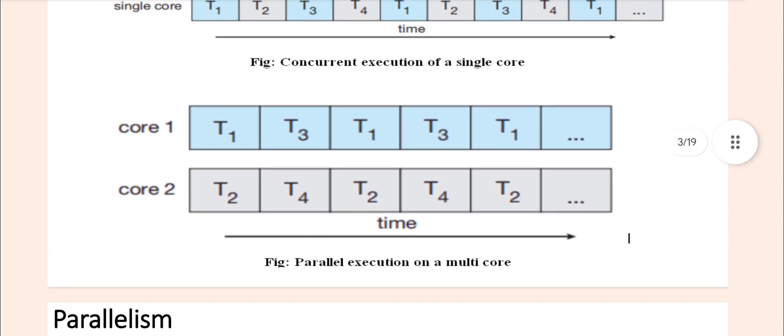See the parallel execution. Parallel execution means what? A multiple core, a multiple CPU core run tasks simultaneously. Here there are two core. Core 1, core 2. Core 1 run task T1, task T3. Core 2 run task T2, task T4. So parallel execution means multiple CPU core run task simultaneously.